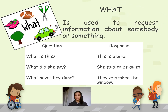What — when we use 'what.' What is used to request information about somebody or something. Para preguntar información sobre algo o alguien. Examples: What is this? This is a bird. What did she say? She said to be quiet. What have they done? They've broken the window.